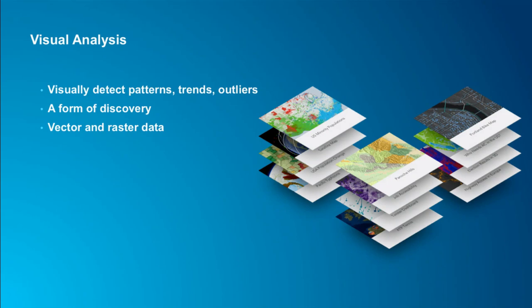Visual analysis allows us to quickly detect patterns, trends, and outliers in our data. For example, you might notice one particular area with a high rate of infectious disease, or see a trend in the direction and speed that an epidemic is moving throughout a state. You're not necessarily going to find statistical significance through visualization, but you can explore the information and pick out things you might not otherwise notice. Visualization is also a form of discovery and data exploration, greatly enhanced in interactive applications by tools like a swipe tool, charts, or toggling layers on and off.